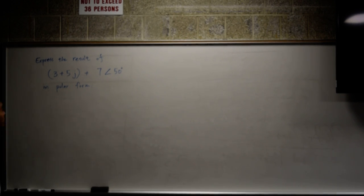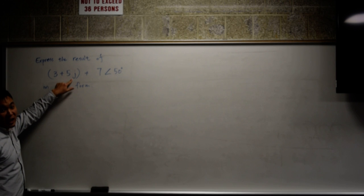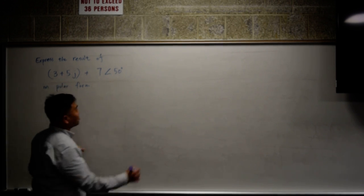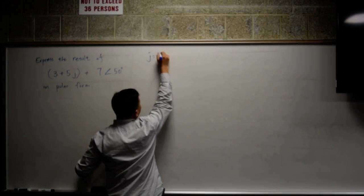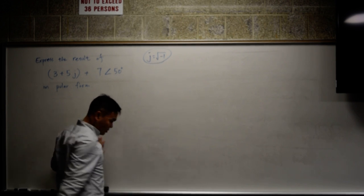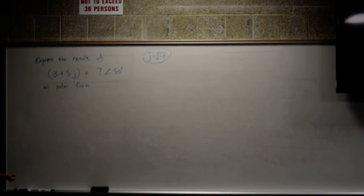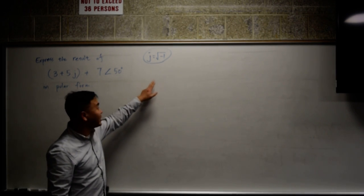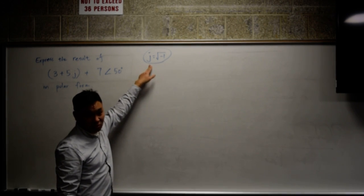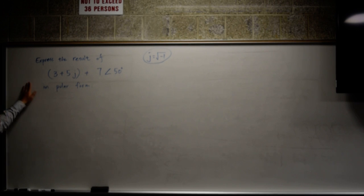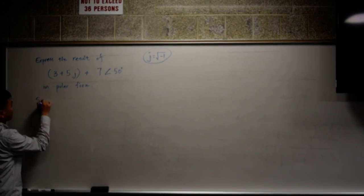I'm using the engineering convention where instead of using i, j is the square root of negative 1. I explained before that mathematicians like to call square root of negative 1 as i and engineers like to use j for it. Suppose you have this. How do you solve this?